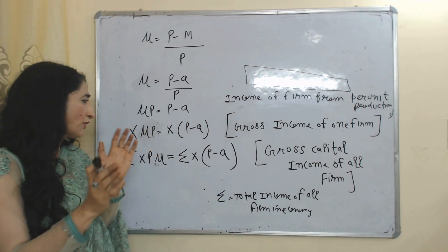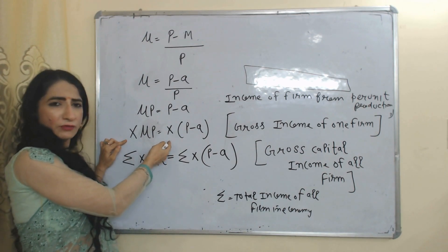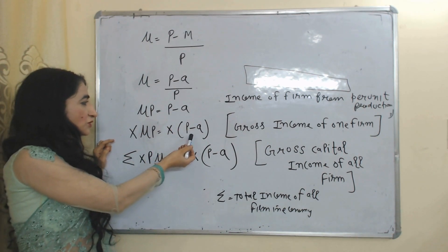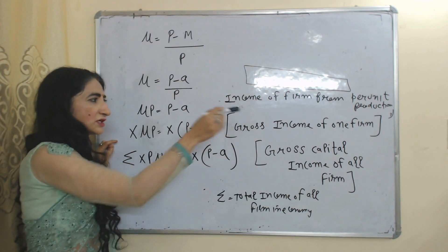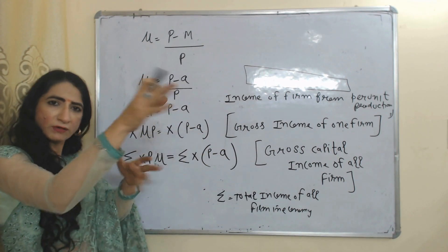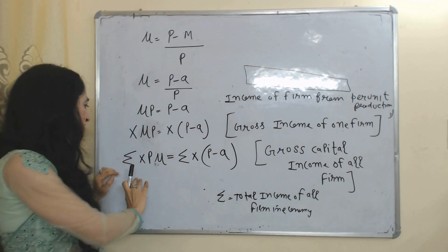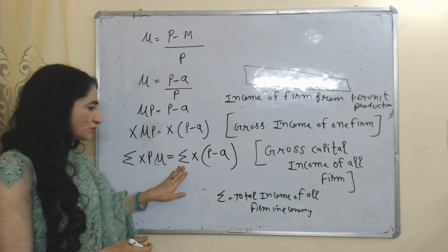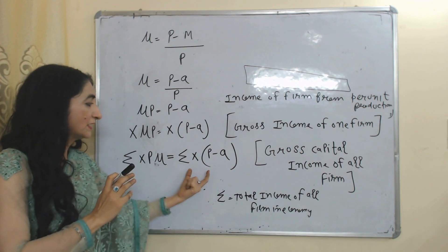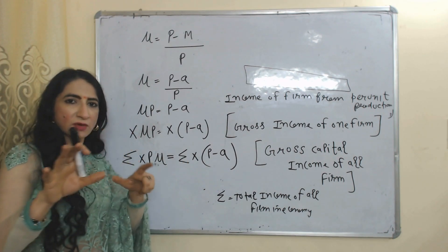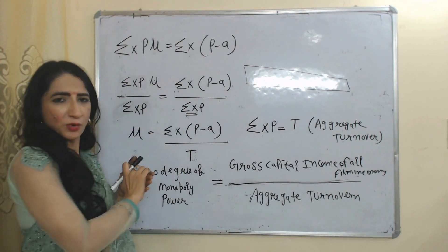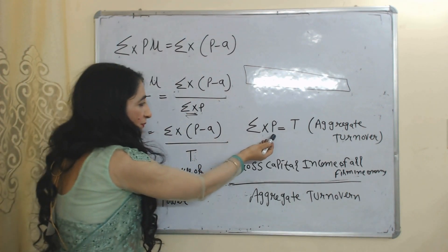Suppose a firm is producing a total of X number of goods. We multiply both sides by X, and X times (P minus A) equals the gross income of one firm. In order to calculate the gross income of all firms in the economy, we take the summation of both sides. The summation represents the total income of all firms in the economy.